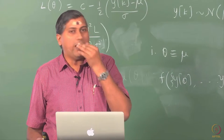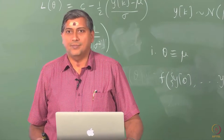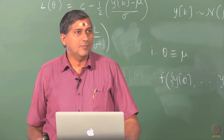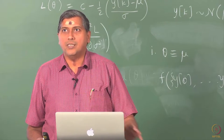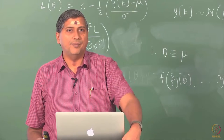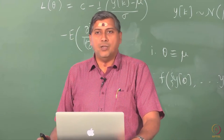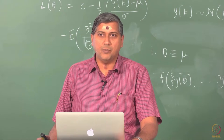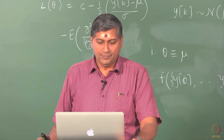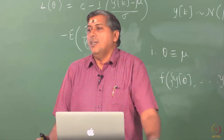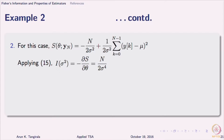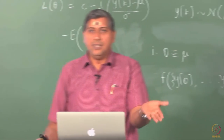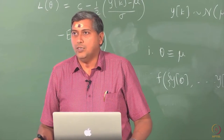What happens when we ask the same question with respect to σ²? Earlier, with a single observation, the information contained in σ² is 1/(2σ⁴). With n observations, by the same argument, you get n/(2σ⁴). This also says that you have n degrees of freedom to estimate σ², given that mu is known.